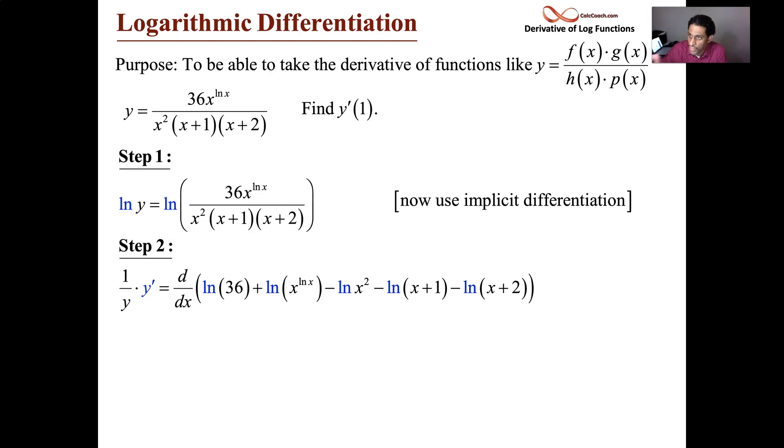So, in executing the implicit differentiation, we take the derivative of the left-hand side, 1 over y, y prime again. And now it's our job to take the derivative of the right-hand side, now that we've broken it up. Log of 36 is a constant zero derivative there.